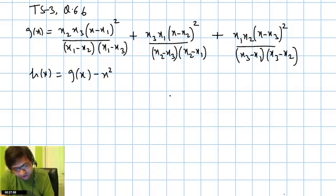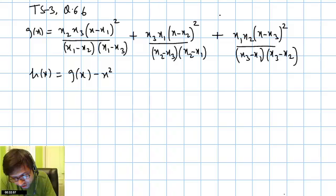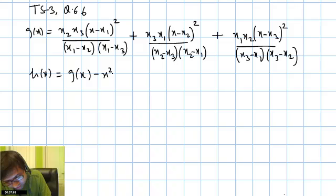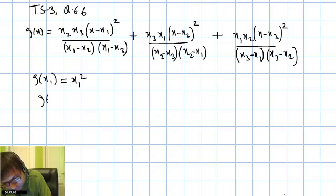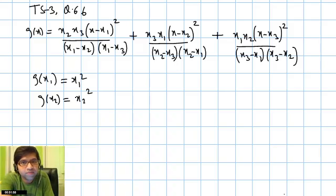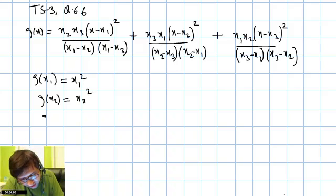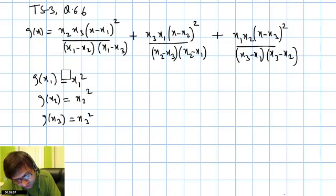We consider the function h(x) = g(x) - x². The main idea is to find the simplified value of G(x1), which will come out to be x1². Similarly, G(x2) = x2² and G(x3) = x3².